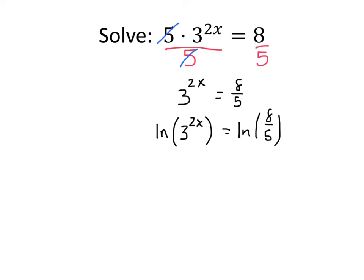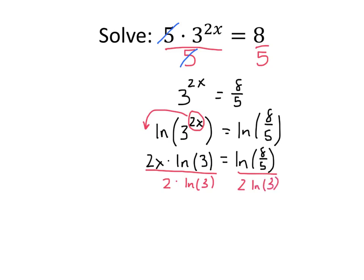Using my log rule again, the 2x comes down: 2x · ln(3) = ln(8/5). To get x by itself, I'll divide both sides by 2 and also by ln(3). When we divide out the 2s and the ln(3)s on the left, we get x = ln(8/5)/(2·ln(3)). And that's our answer.